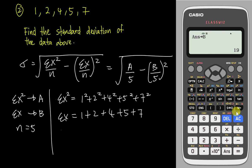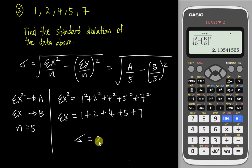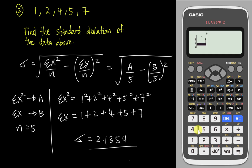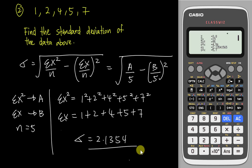You can double-check by doing shift recall — you should see values for A and B. Now I enter: square root of (alpha A ÷ 5) minus (B ÷ 5)², closing the bracket. The calculator gives a very nice number: the standard deviation is 2.1354. To verify, I go to menu → 6 (statistics) → one variable, insert the data 1, 2, 4, 5, 7, then go to option → one variable calculation → number 3. The standard deviation shown is 2.1354 — exactly correct.